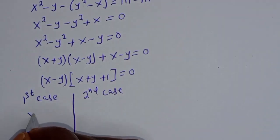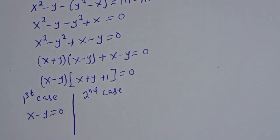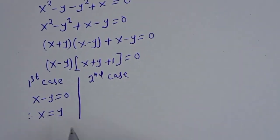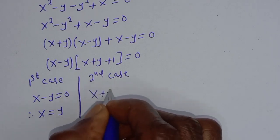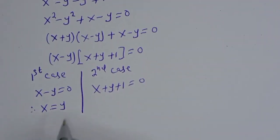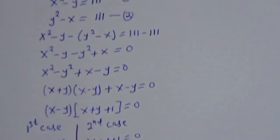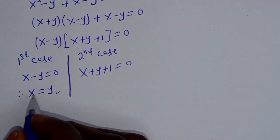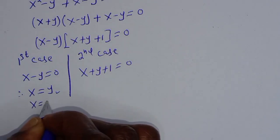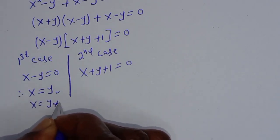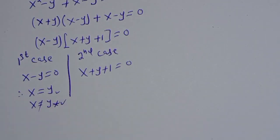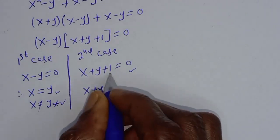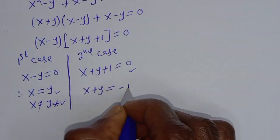The first case is x minus y equals 0, meaning x equals y. The second case is x plus y plus 1 equals 0. But the question states that x is not equal to y, so the first case is undefined. Since x is not equal to y, we consider the second case: x plus y equals minus 1. Let's call this equation 3.